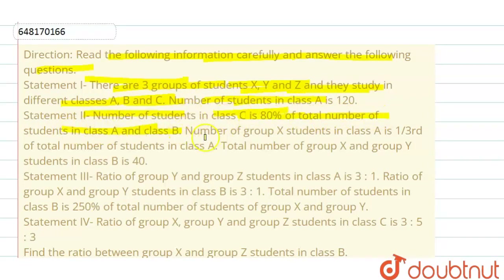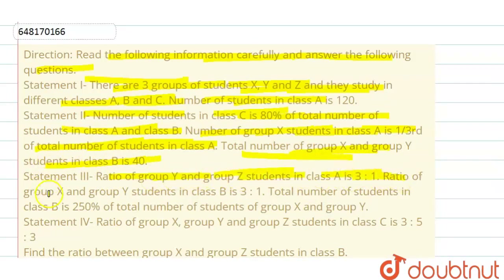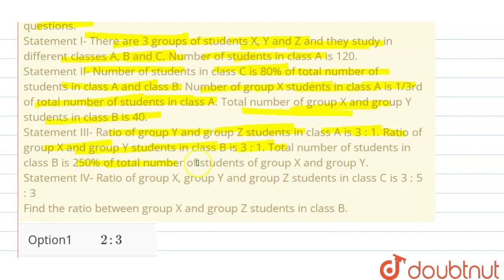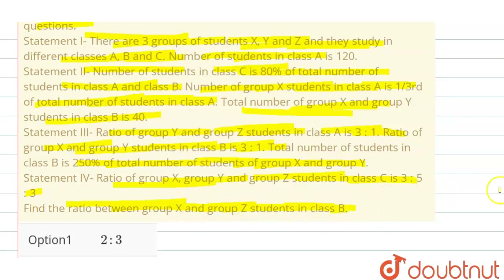The total number of students in class A and B. Number of group X students in class A is one third of the total number of students in class A. Total number of group X and Y students in class B is 40. Ratio of group Y and Z in class A is 3:1. Ratio of group X and Y students in class B is 3:1. The total number of students in class B is 250% of the total number of students in group X and Y. Ratio of group X, Y and Z students in class 3 is 3:5:3. We have to find the ratio between group X and Z students in class B.